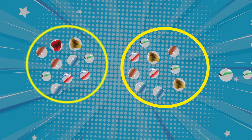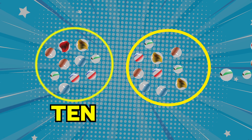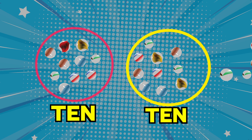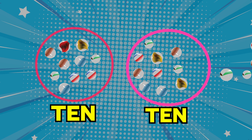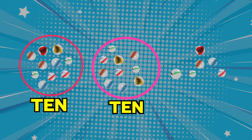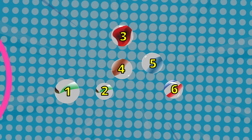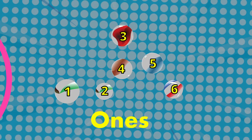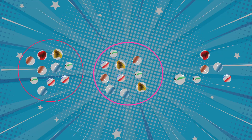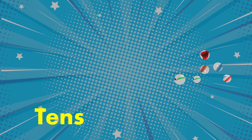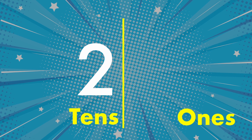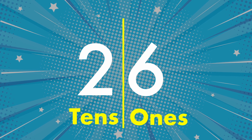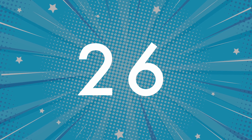Ten marbles in the first frame and ten more in the second frame. But as you can see, there are six lonely marbles outside the group. These six lonely marbles are called ones. Tens are groups of ten, and ones are the singles. They work together to make numbers.